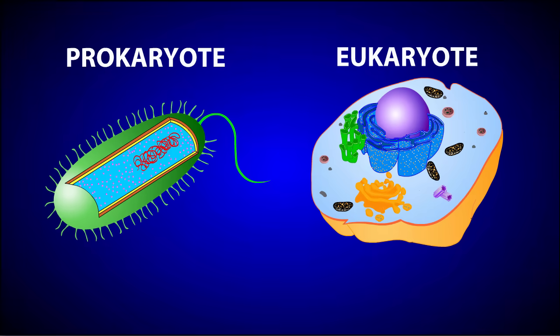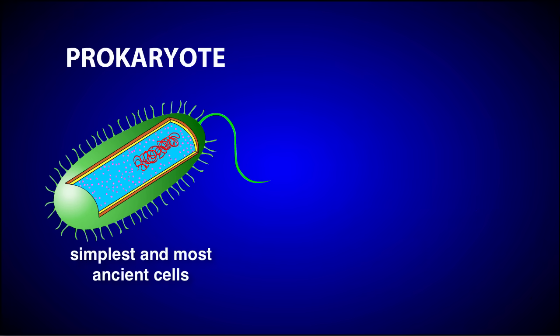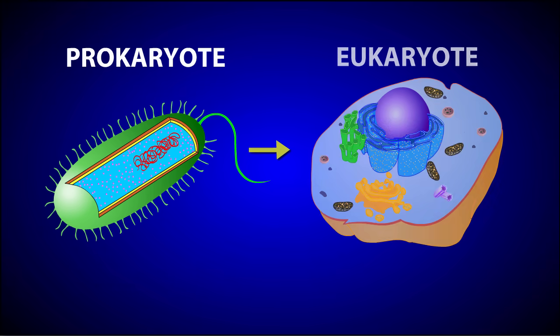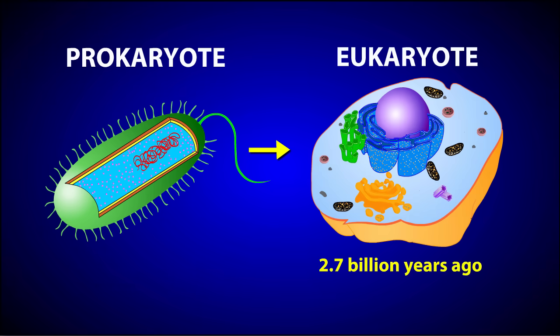On Earth, there are two major types of cells: prokaryotic and eukaryotic. Prokaryotic cells are the simplest and most ancient types of cells. They were the only form of life on Earth for billions of years before eventually giving rise to eukaryotic cells.